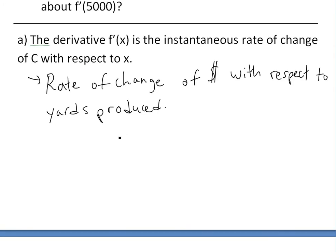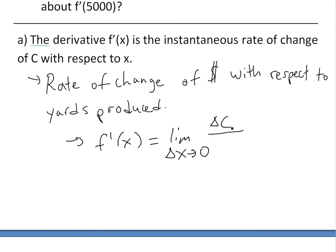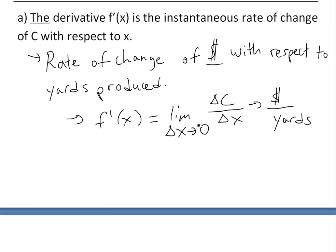Since the derivative is the rate of change, f'(x) equals the limit as Δx approaches zero of Δc over Δx. The units are therefore dollars divided by yards. This represents the rate at which the production cost is increasing — basically how much it costs to produce those bolts per yard.